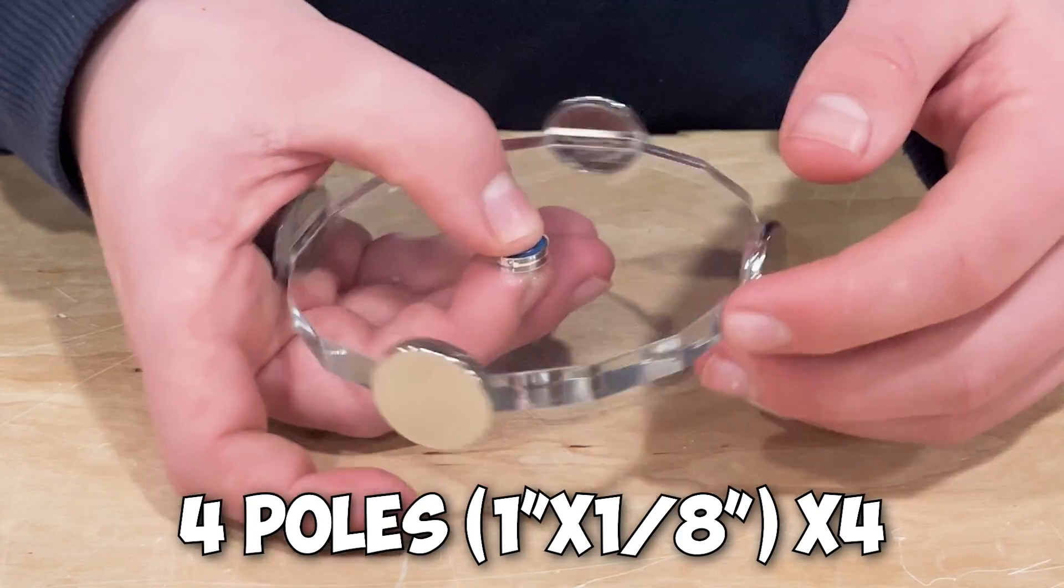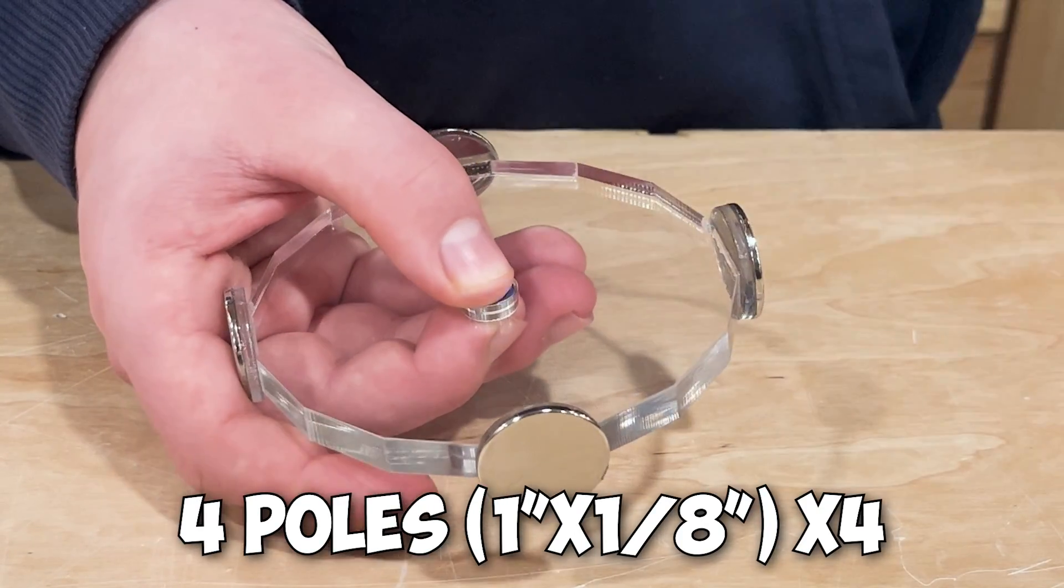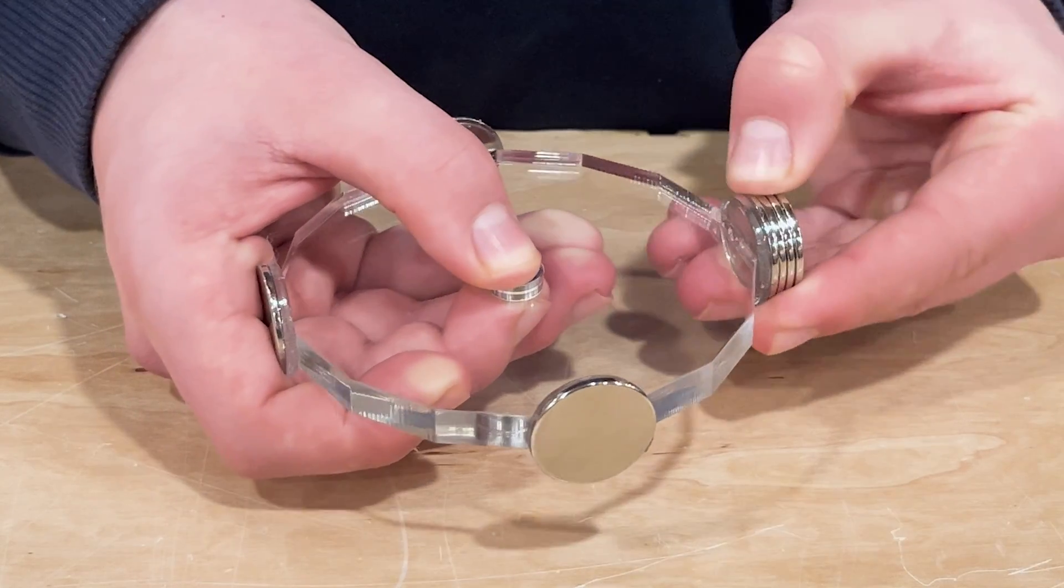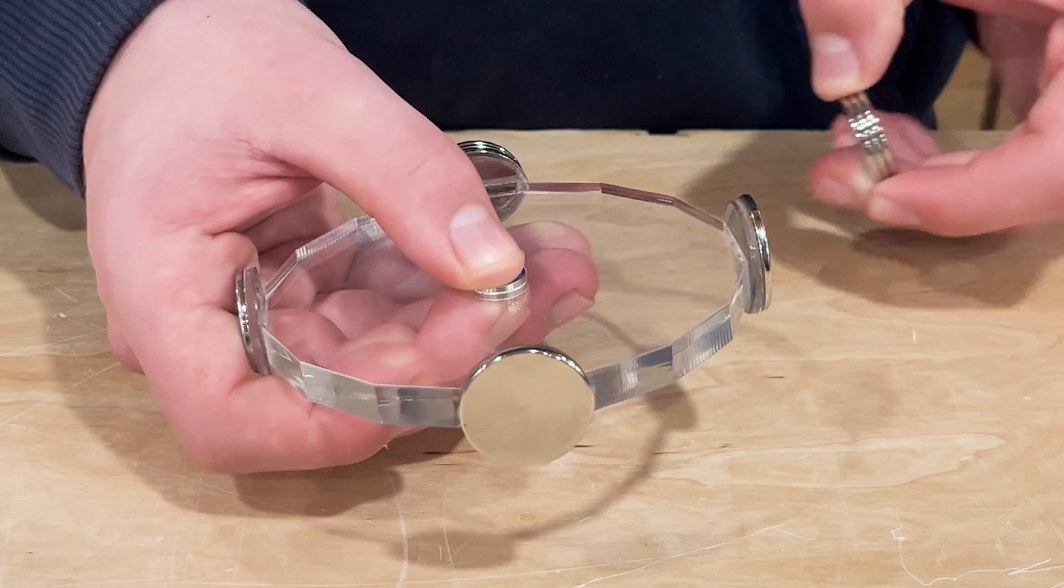The rotor is made up of 3/8 of an inch acrylic and 4 sets of 4 1-inch by 1/8 of an inch neodymium permanent magnets. Also, I am using low friction bearings.